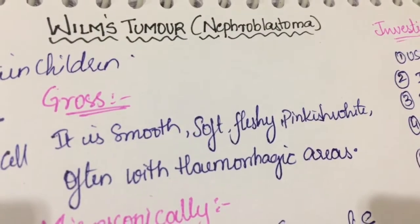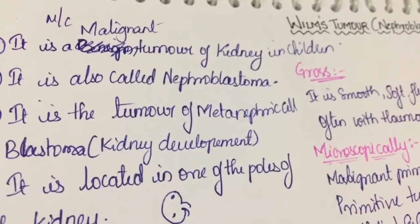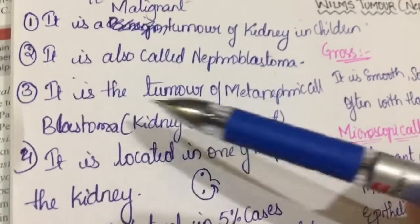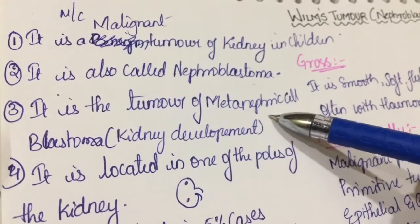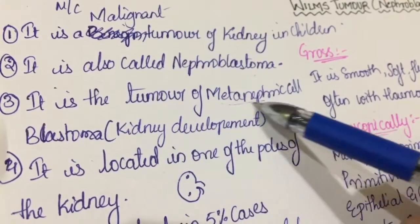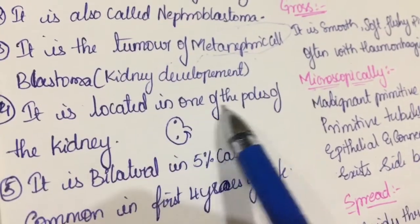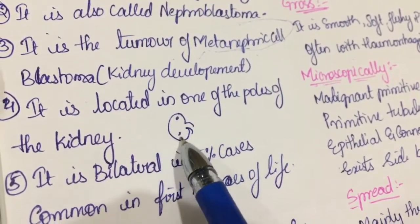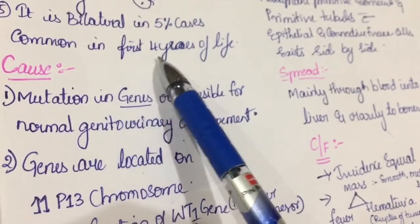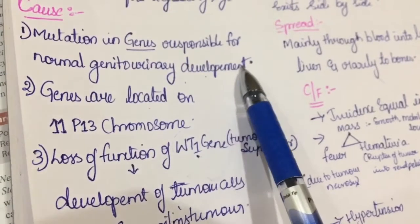Wilms tumor, or nephroblastoma, is the most common malignant tumor of the kidney in children. It is a tumor of metanephric cells, also called metanephric blastoma. Metanephric cells are embryonal cells which further develop into the kidneys. It is located in one of the poles of the kidney, either upper or lower pole. Bilateral cases occur in 5% of cases. It is most common in the first 4 years of life.